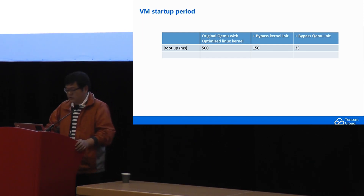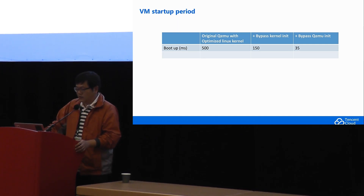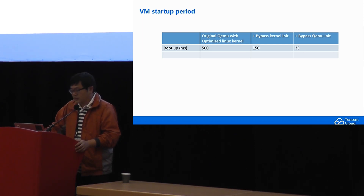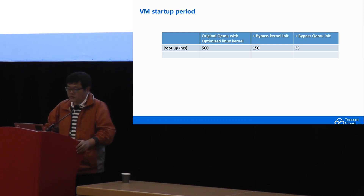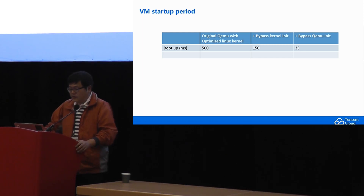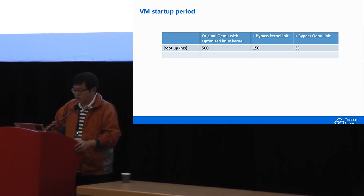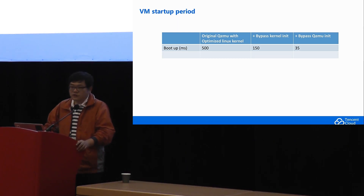This page shows the guest boot-up time with different configurations. Originally, QEMU with an optimized Linux kernel gives about 500 milliseconds boot-up. After we applied the first optimization — bypassing the kernel initialization — we achieve about 105 to 150 milliseconds. And after we apply bypassing the QEMU initialization, we achieve about 35 milliseconds for the VM to boot up, which is a huge improvement.